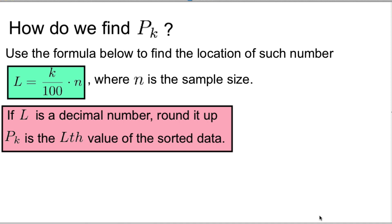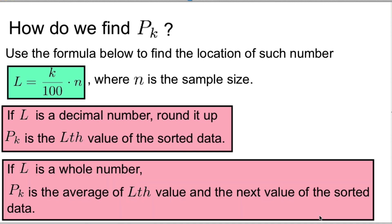When L becomes a decimal number, we round it up. And then P_k is the L-th value of the sorted data. If L is a whole number, then P_k will be the average of the L-th value and the next value of the sorted data.